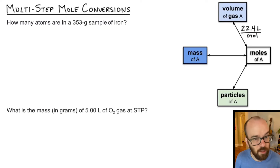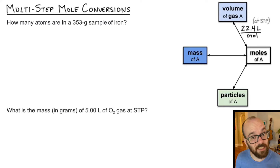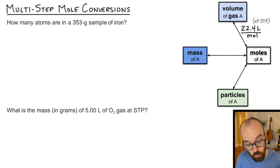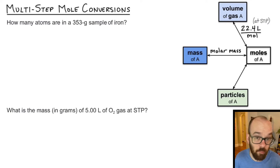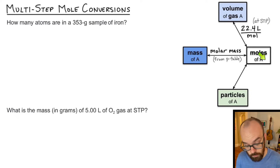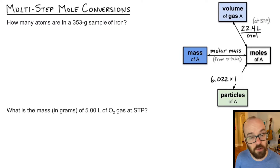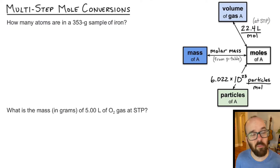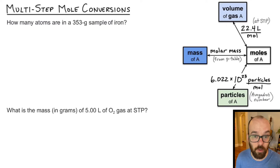If we're converting between the volume of a gas and the number of moles, we use 22.4 liters per mole — and that's only valid at standard temperature and pressure. If you're not at STP, you'd need to use the ideal gas law, but we won't cover that here. If converting between moles and mass, you need the molar mass from the periodic table. For converting between moles and number of particles, we use Avogadro's number: 6.022 times 10 to the 23rd particles per mole. Particles can be atoms, molecules, ions, or any discrete particle of a substance.